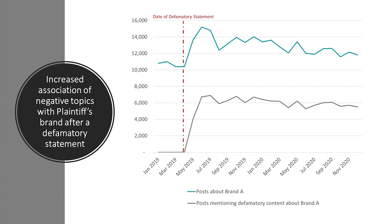Just because more people are talking about a brand is not by itself evidence of harm. We need to look at the content of the conversations to understand whether the defamation impacted the sentiment or associations that consumers have of the plaintiff. In this example, Brand A was already a topic of consumer conversation when the alleged defamation occurred. Using a combination of automated and manual review, we dug into the topics within posts about the plaintiff before and after the defamatory statement was made. Virtually no online conversation about the plaintiff included the negative content that was the subject of the defamatory statement prior to the statement being made. Immediately after the alleged defamatory statement was made, a significant portion of the posts discussing the plaintiff included the defamatory claims or topics directly related to the at-issue statement. The data clearly support the expert's conclusion that the brand's image was damaged by the negative information. New and negative associations were made between the plaintiff and the false and defamatory information.